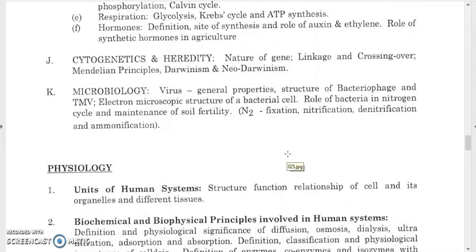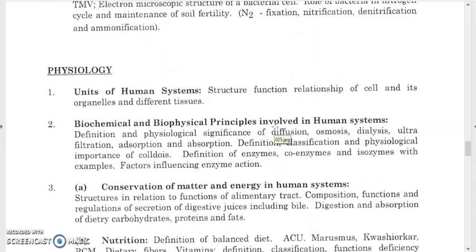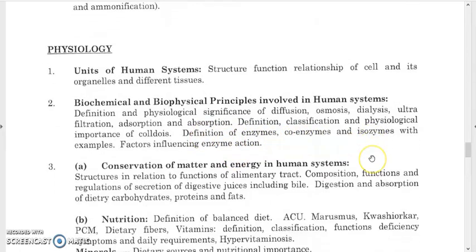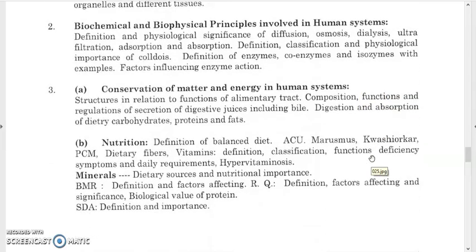Crossing over leads to variation and aligns with Mendelian principles. For microbiology, study virus general properties and structure, bacteriophage, TMV, microscopic structure of a bacterial cell, role of bacteria in the nitrogen cycle, soil fertility, nitrogen fixation, nitrification, denitrification, and ammonification. For human physiology units, study structure-function relationships of cells and organelles, diffusion, osmosis, dialysis, ultrafiltration, absorption, and the definition and classification of colloids, enzymes, coenzymes, and isozymes.